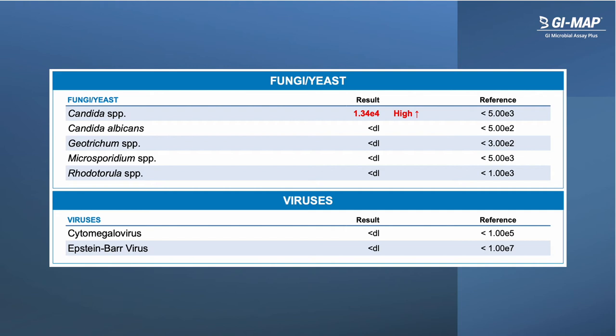Below the fungi and yeast section is a section that includes cytomegalovirus and Epstein-Barr virus. These viruses commonly infect certain tissues in the body but are relatively rarely detected in the gastrointestinal tract. When these viruses are detected at high levels on GI Map, they may be associated with gut inflammation and intestinal barrier dysfunction.